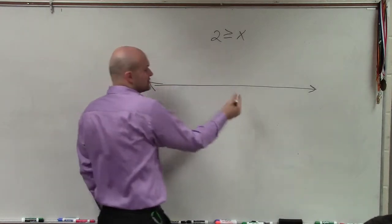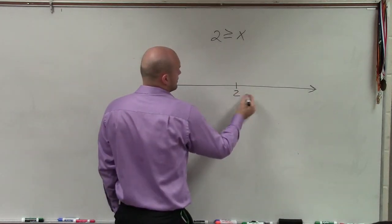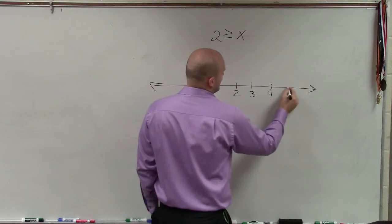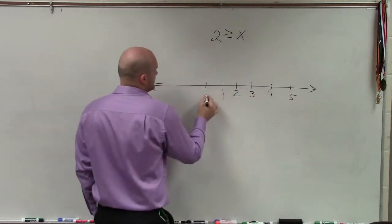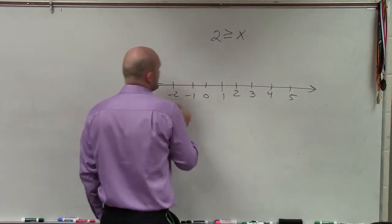Again, the main important thing is I go to 2. 2, and then here's 3, 4, 5, 1, 0, negative 1, negative 2.